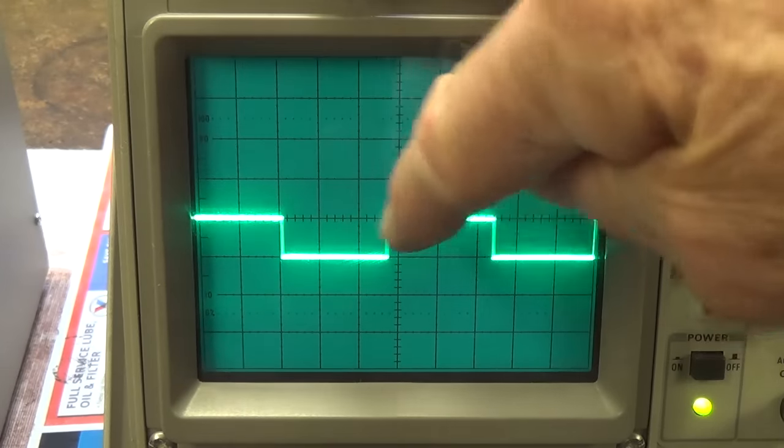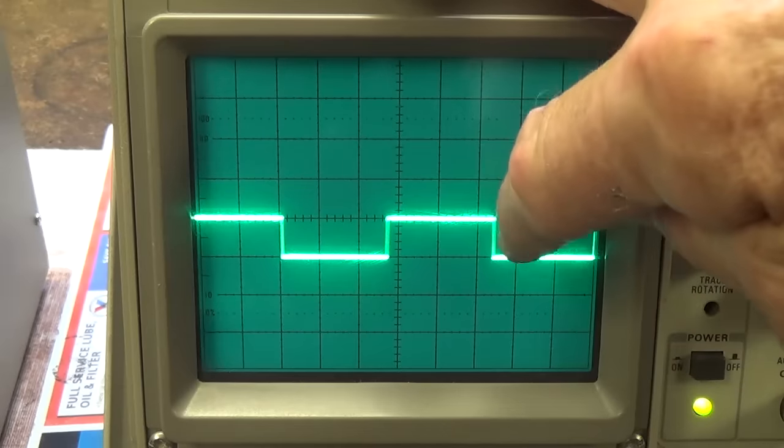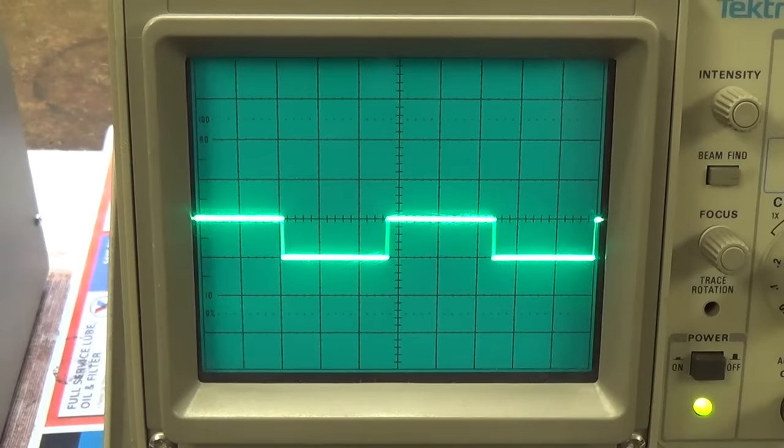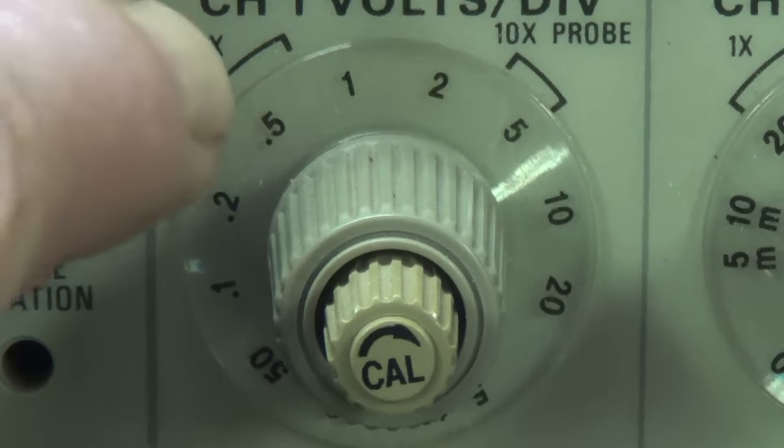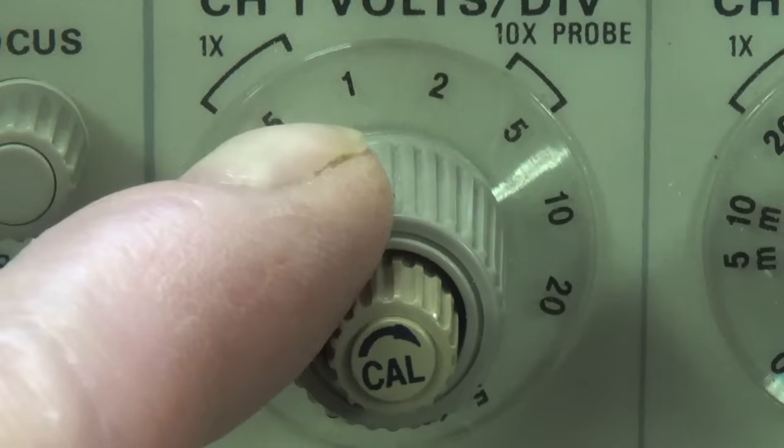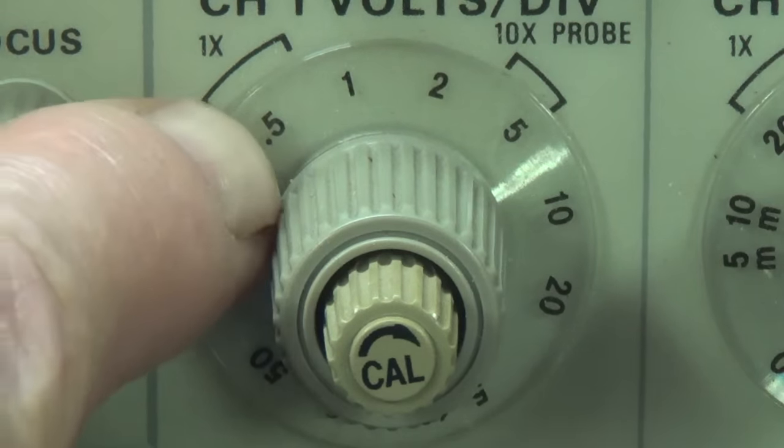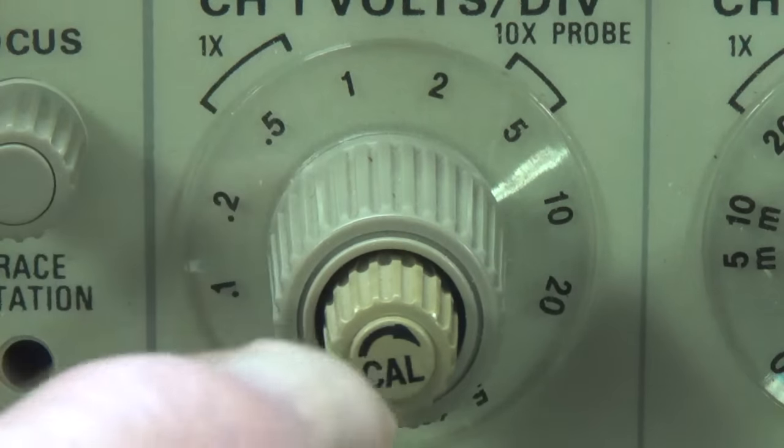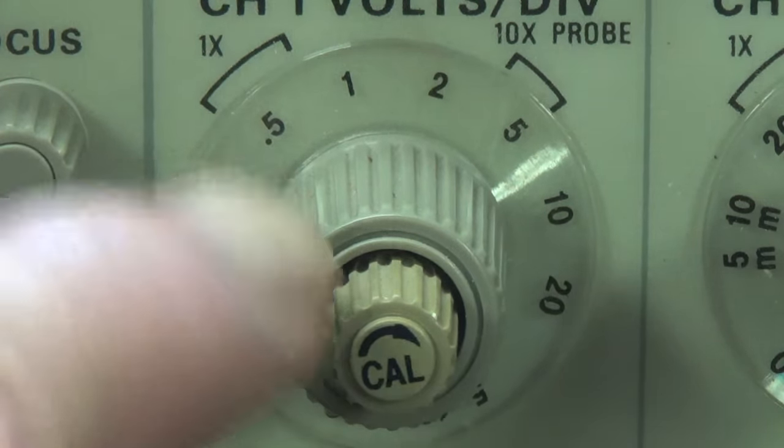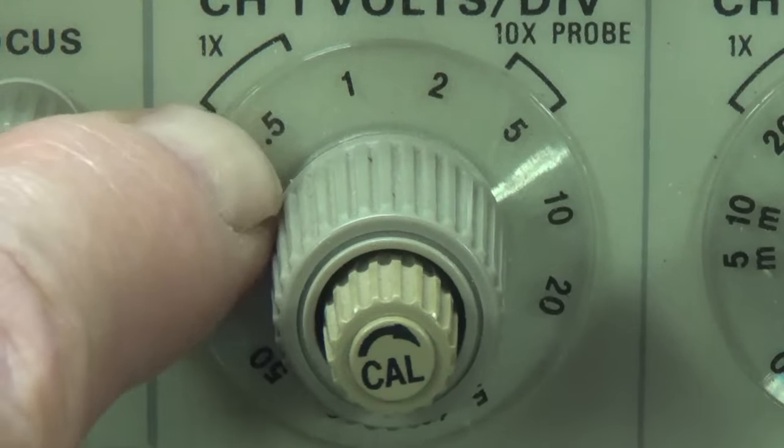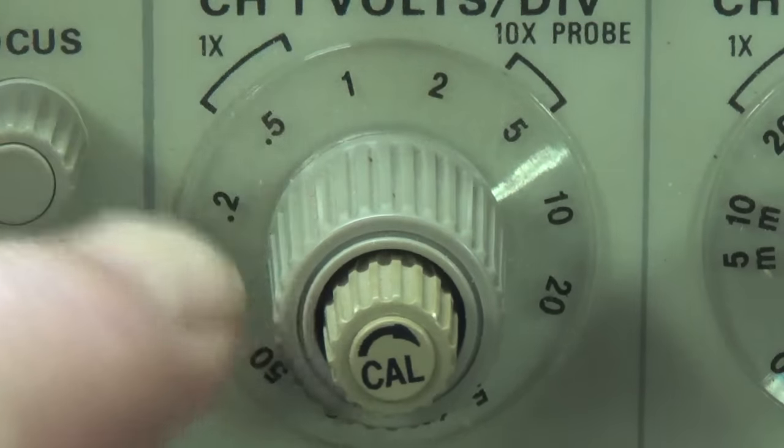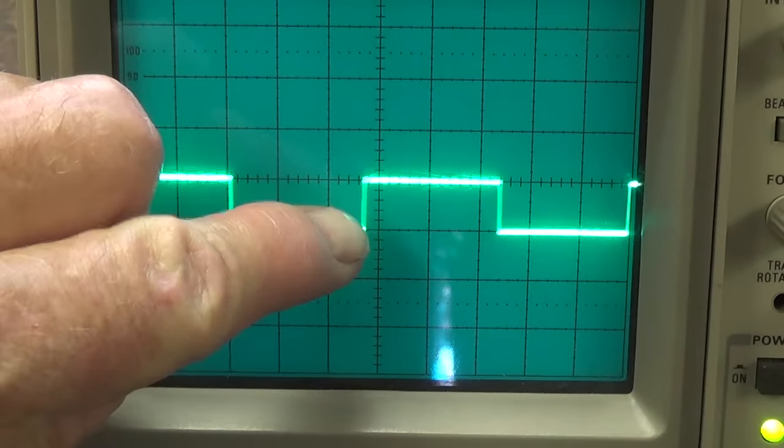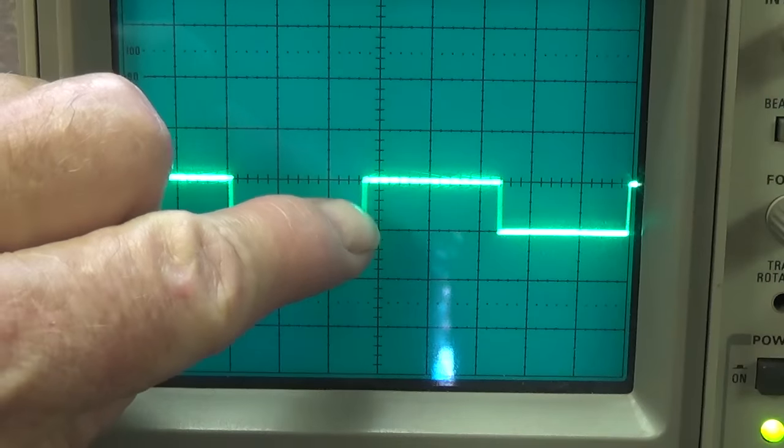And how many squares tall is our waveform? If you say exactly one square, you win the prize. The reason it's one square high is no coincidence. We just adjusted this knob so that each vertical square has a voltage value of 0.5 volts. So, we have an output signal of exactly 0.5 volts. We set the scope to give us one square deflection on the screen, one square for every 0.5 volts.